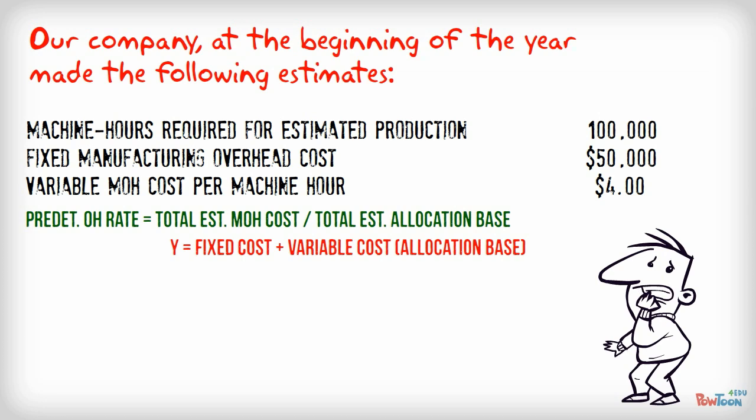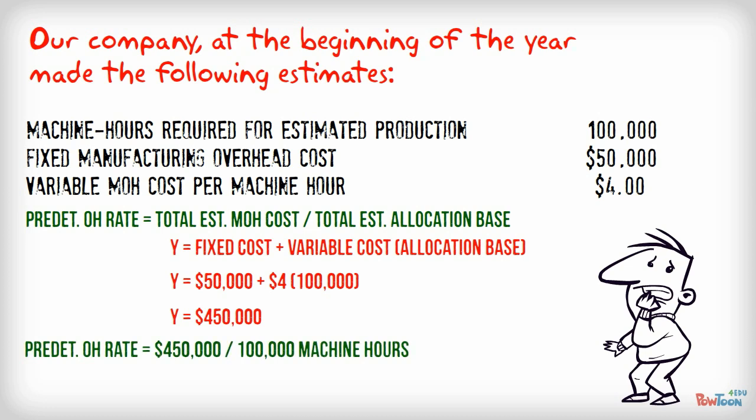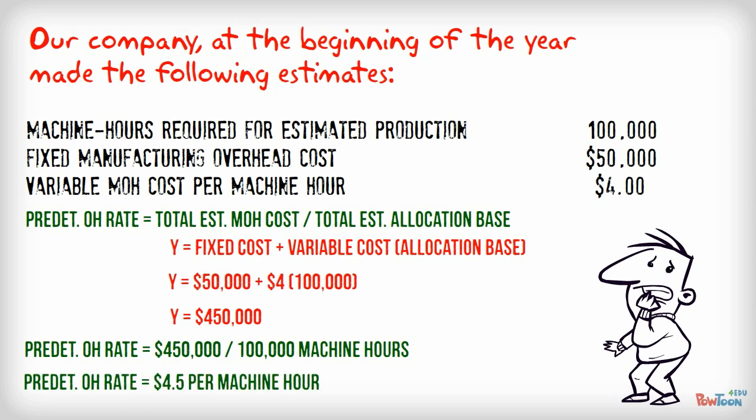When we calculate using the cost formula we find that the total manufacturing overhead cost is $450,000. The predetermined overhead rate however is calculated with the formula from above. Divide the total manufacturing overhead cost with the total estimated allocation base. We get $4.50 per machine hour.